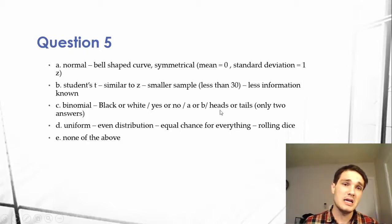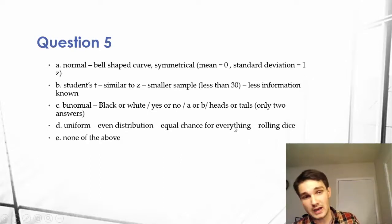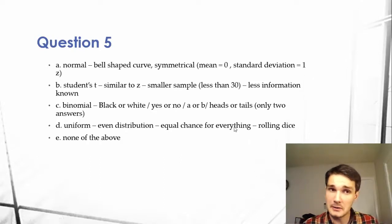Binomial distribution is like black or white, or yes or no, A or B, or heads or tails. There's only one of two answers. So it'd be like, are you sick today? Yes, I am sick. No, I am not sick. There's no middle ground.